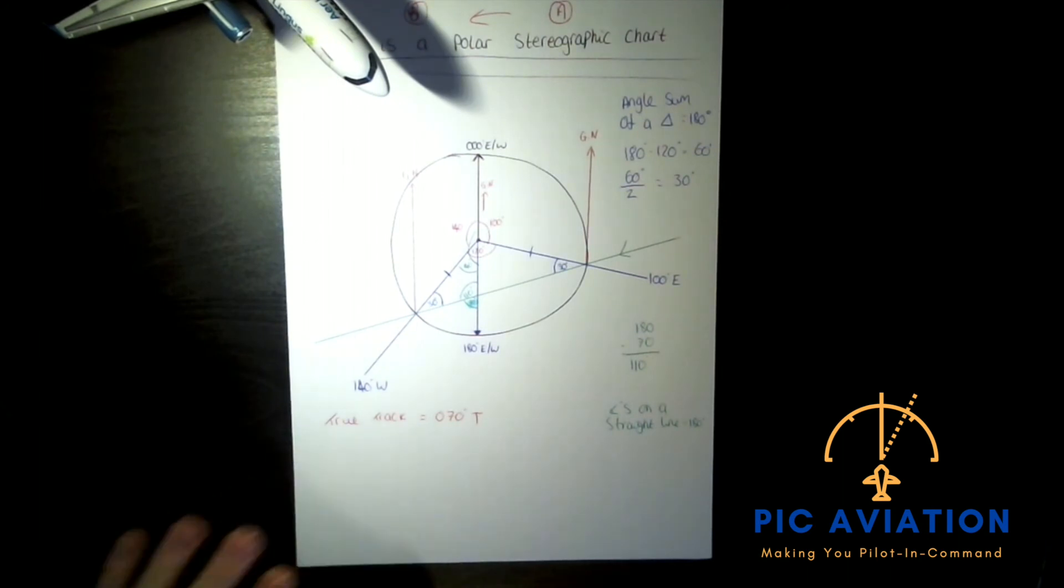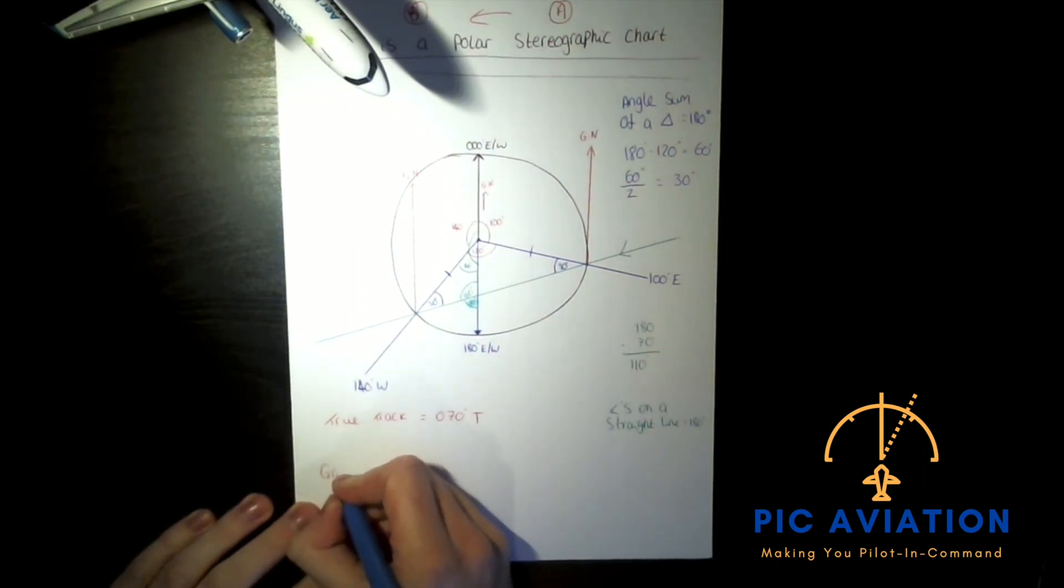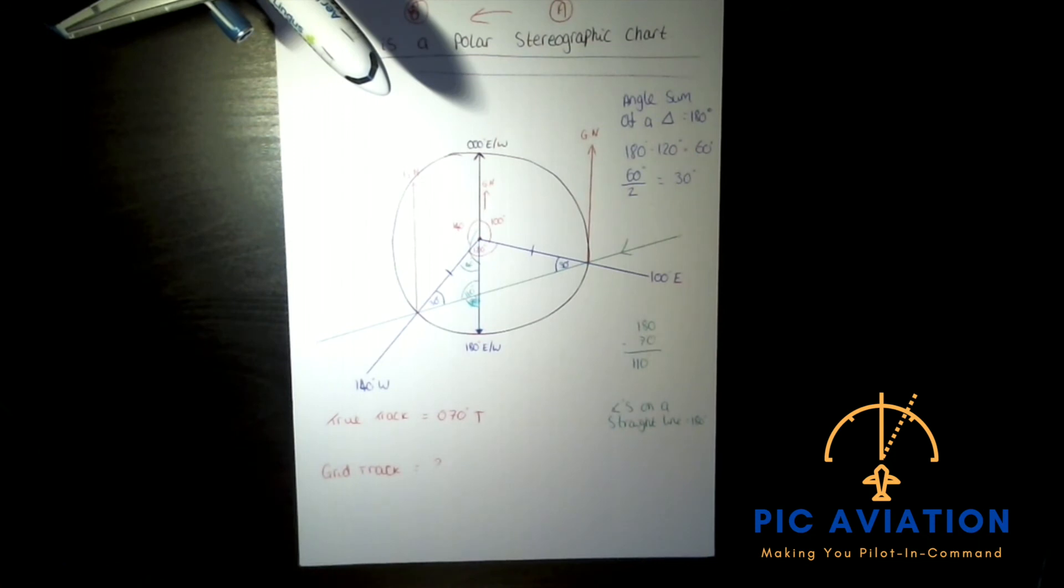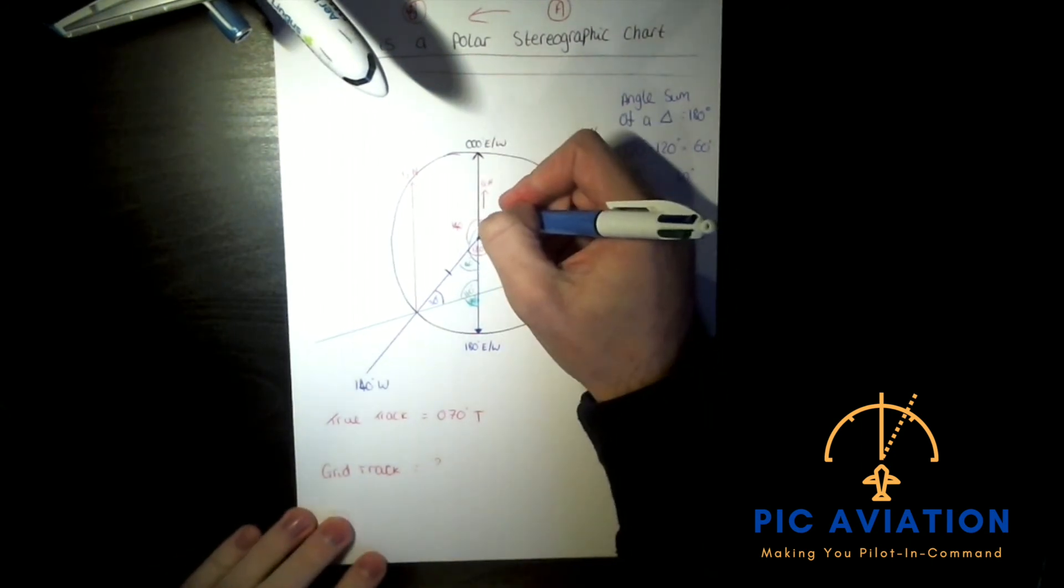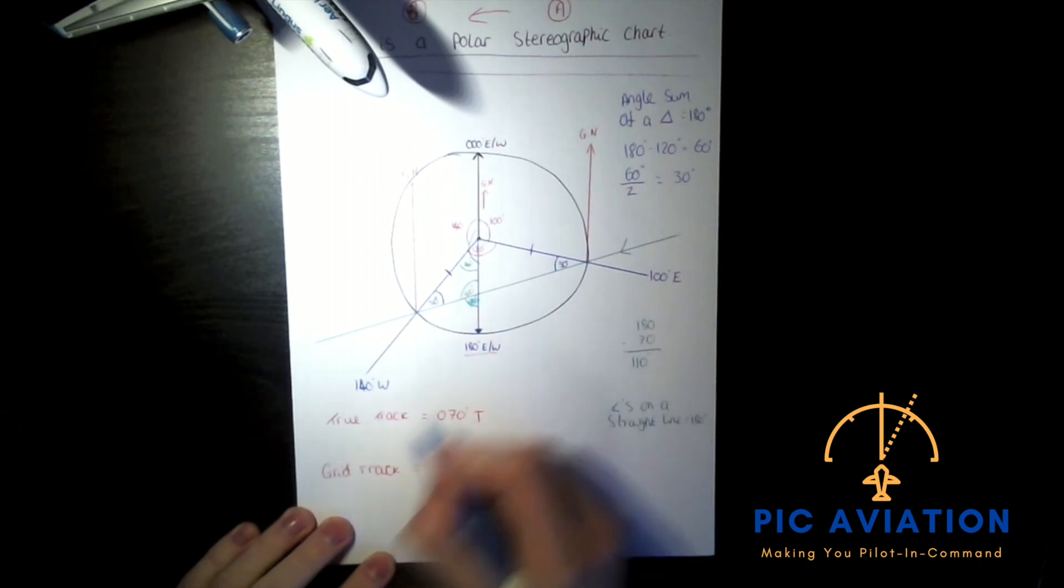We're not done now are we? We've now got to work out what the grid track is. The grid track is still unknown. Well, convergency is important on a polar stereographic. It's the difference between the data meridian and the local meridian at the point where the bearing has been measured. Our data meridian is 0 degrees. And the local meridian is at 180 degrees east west. So the difference is just 180 degrees.